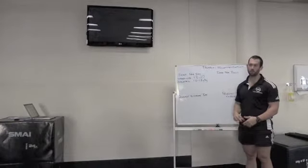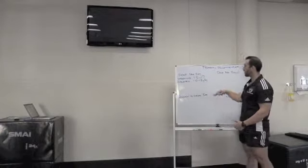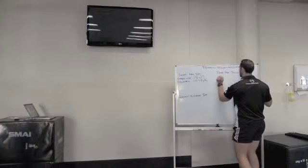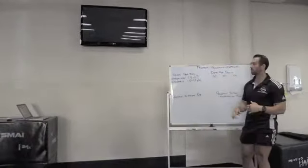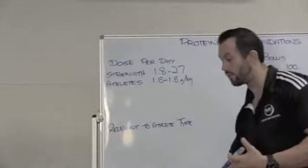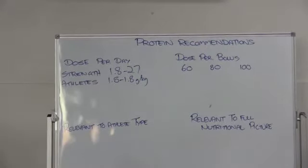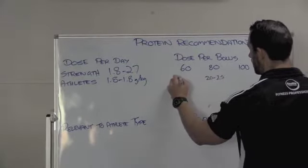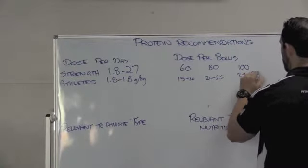Someone training heavy resistance four to five times a week is going to have a high protein demand. For dose per bolus, if we broke it down to three weight ranges — 60 kilos, 80 kilos, 100 kilos — a lot of the bolus studies are based on body weight not lean mass. So that standard 20 to 25 grams scales to 15 to 20 grams for the smaller range and 25 to 30 grams for the larger. There's overlap in those ranges and you can work with that.